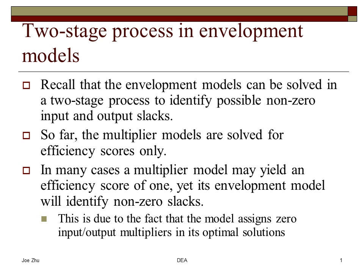However, if you look at the multiplier model so far, we only calculate the efficiency score. So how do you know if you have a situation that is efficient or weakly efficient? In a sense, how do you know that you have an efficiency score of one, but at the same time, there is no slacks? Because in the multiplier model, there is no such thing as a slack in that model.